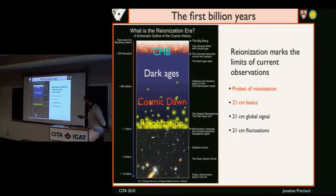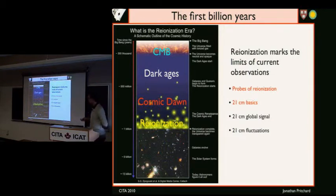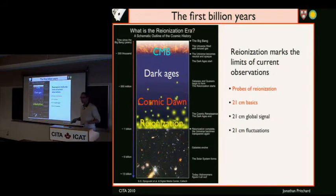This really marks the limits of current observations. In this talk, I'll discuss some of the current probes of reionization, and then talk about the 21-centimeter signal — the basic physics — and then two aspects: the global signal and the 21-centimeter fluctuations. I'll describe what we might be able to learn about astrophysics using them.